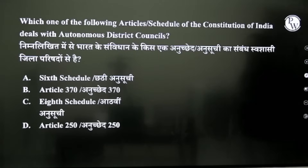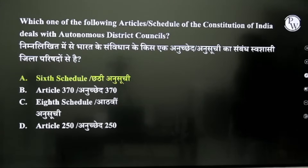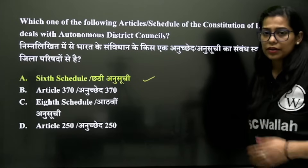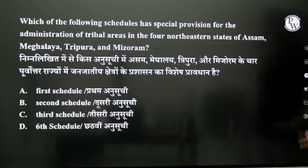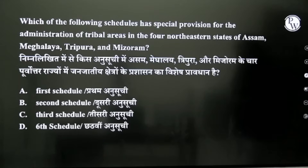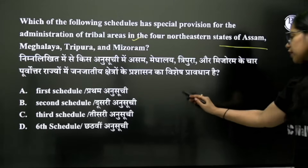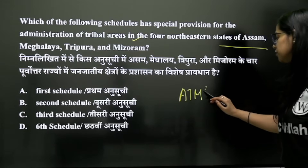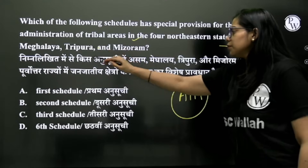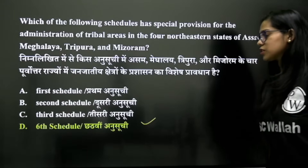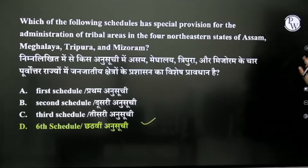Which article/schedule of the Constitution of India deals with the Autonomous District Council? That is the 6th Schedule. You will have seen that many states have tribal populations, so separate Councils are created for them. The 6th Schedule deals with Administration of Tribal Areas of the ATM Square states — that is Assam, Tripura, Meghalaya, and Mizoram.